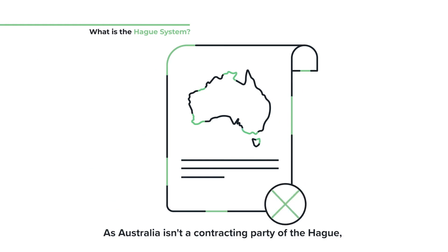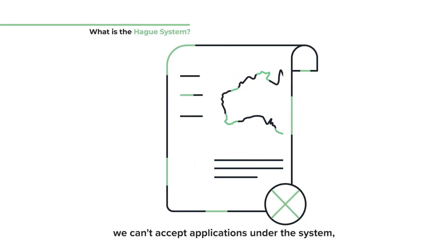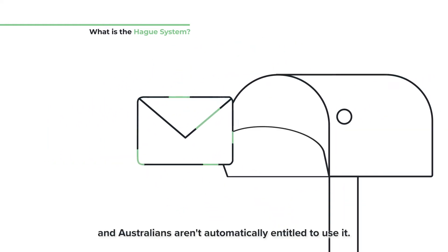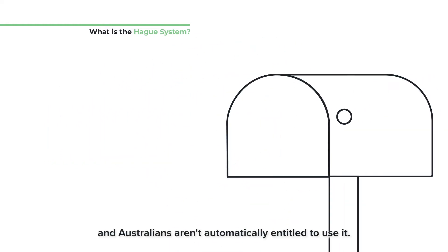As Australia isn't a contracting party of the Hague, we can't accept applications under the system and Australians aren't automatically entitled to use it.